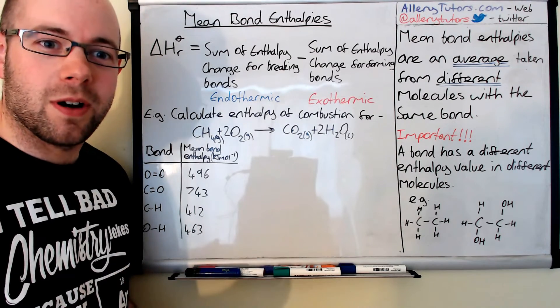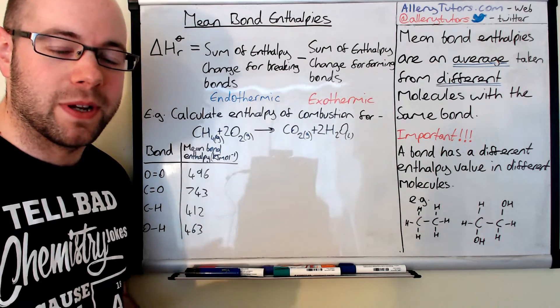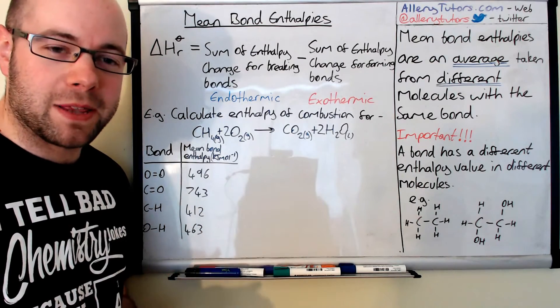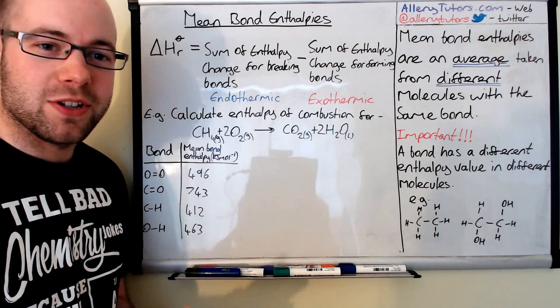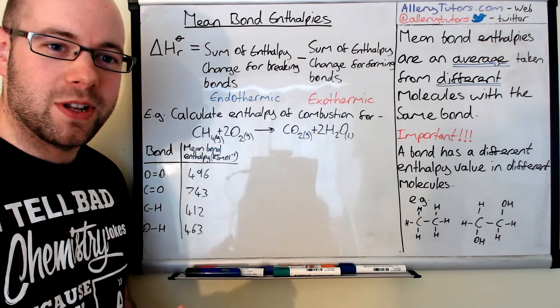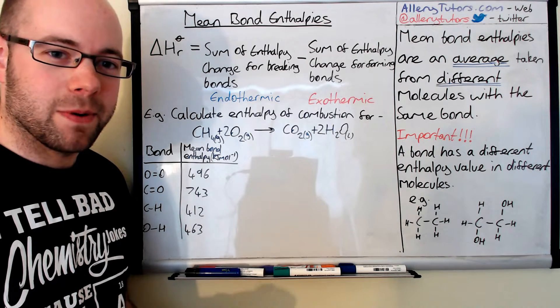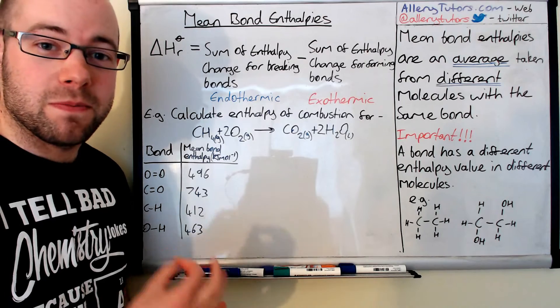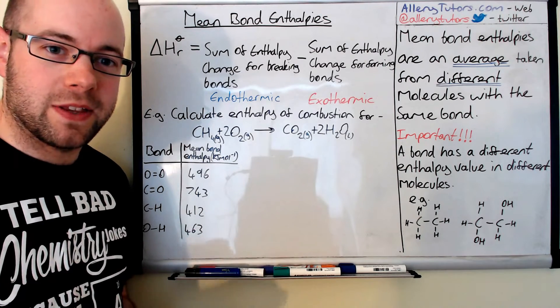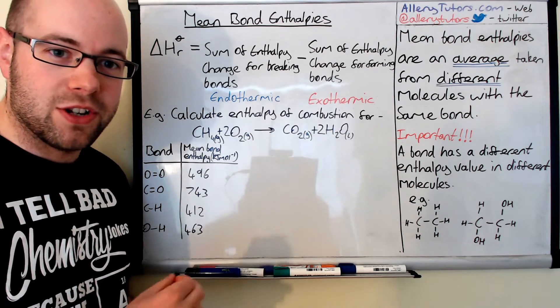We're going to start by looking at what we mean by the word mean bond enthalpy. If you are mathematically inclined, which I assume you are doing A-level chemistry, then you'll know that the mean is a type of average, and the word mean bond enthalpy is basically the average of bond energies or enthalpies.